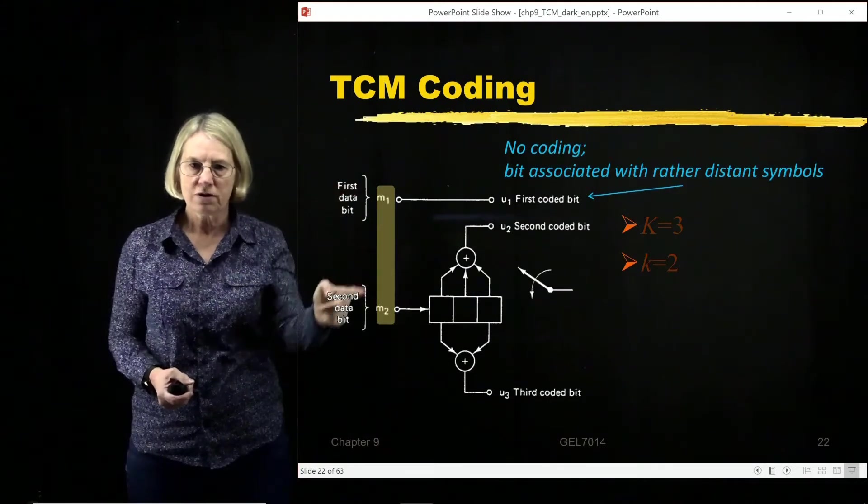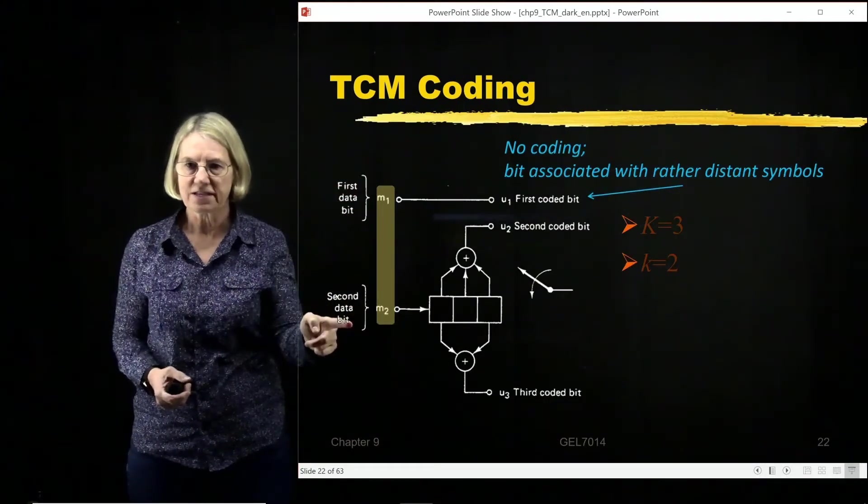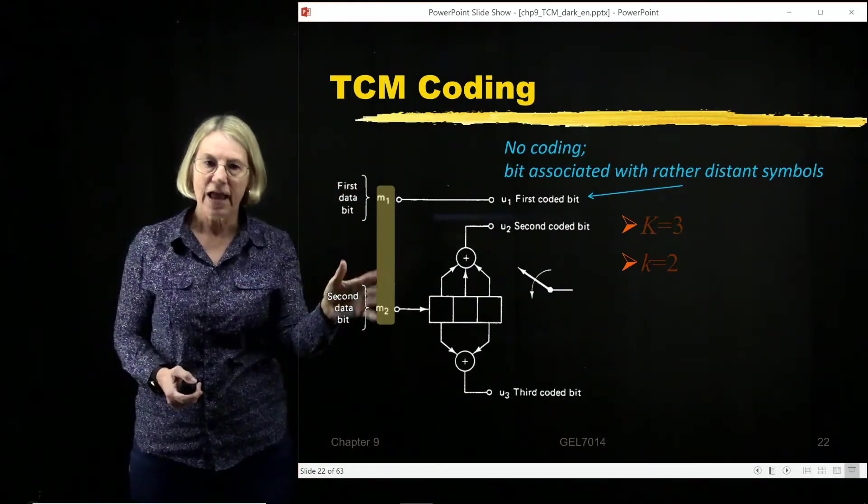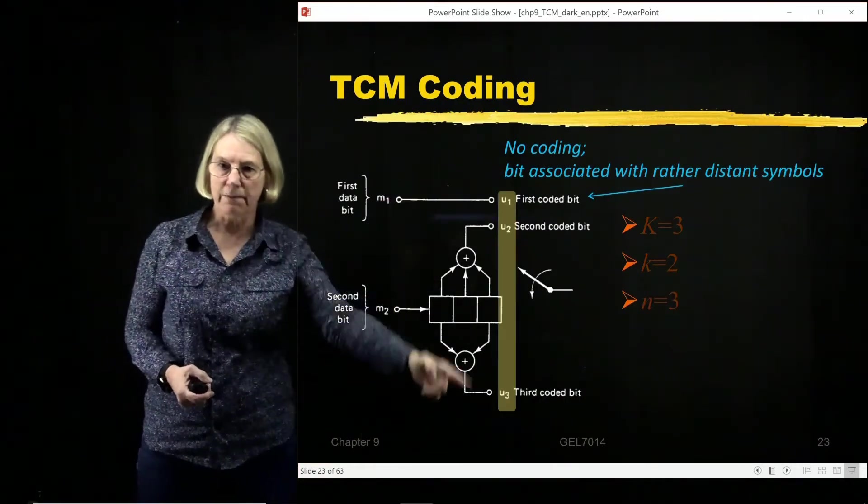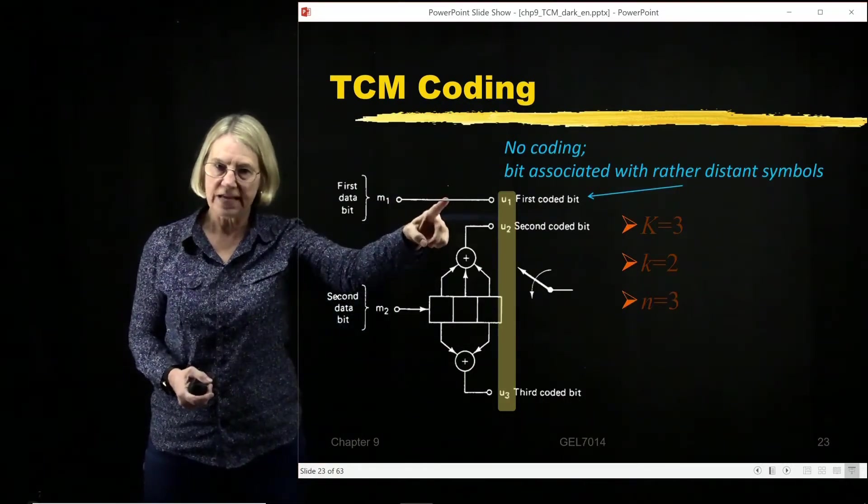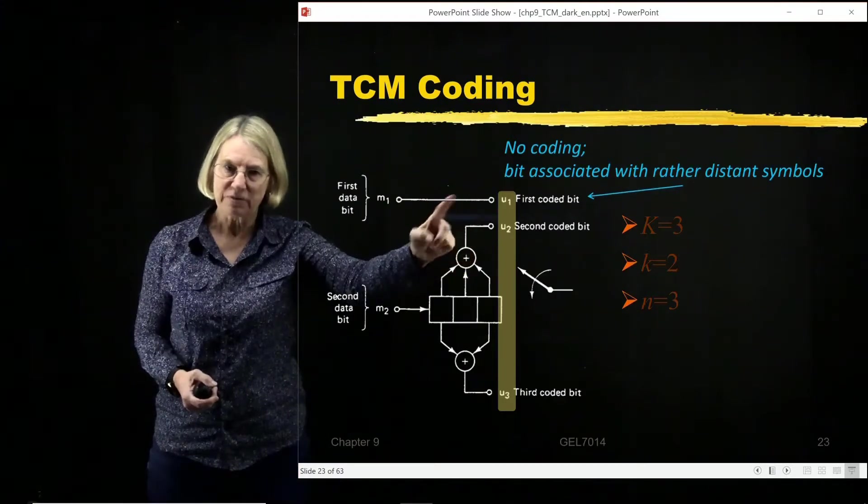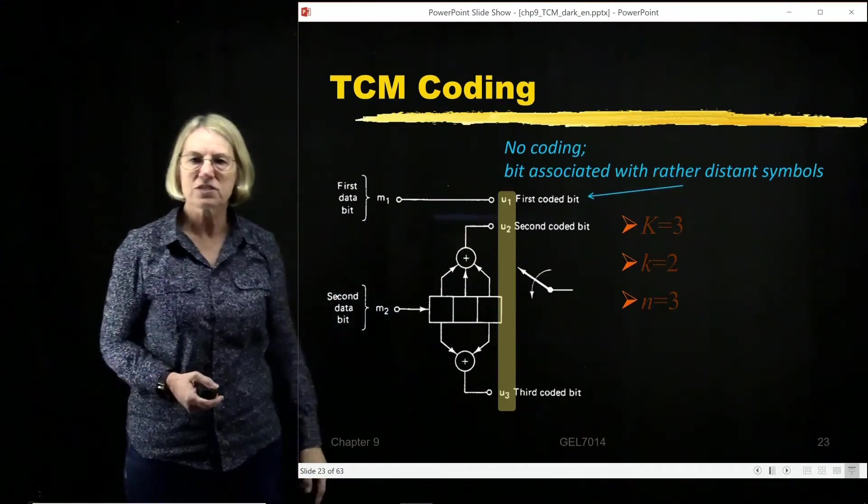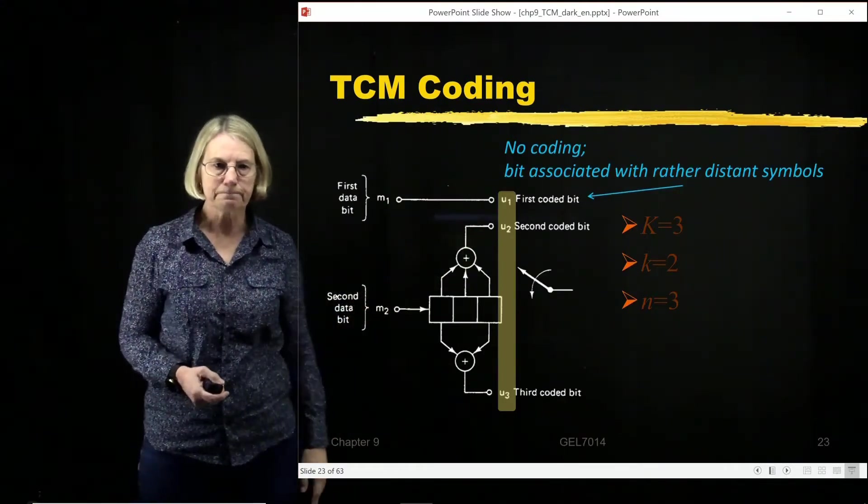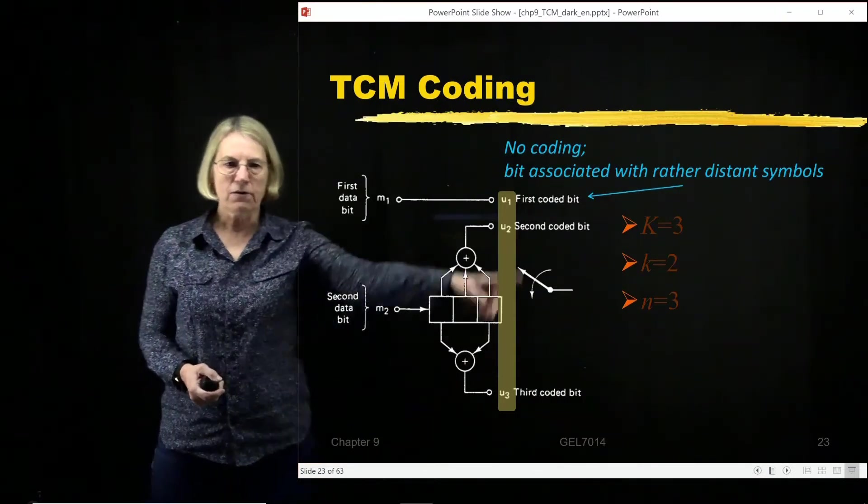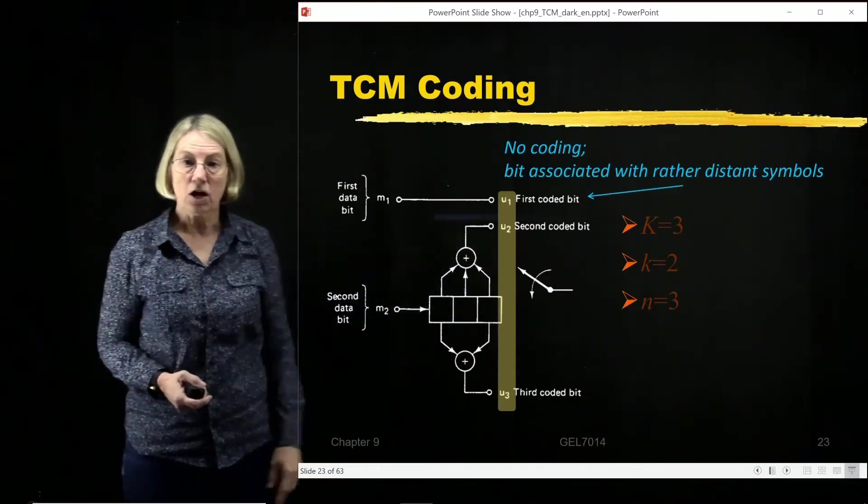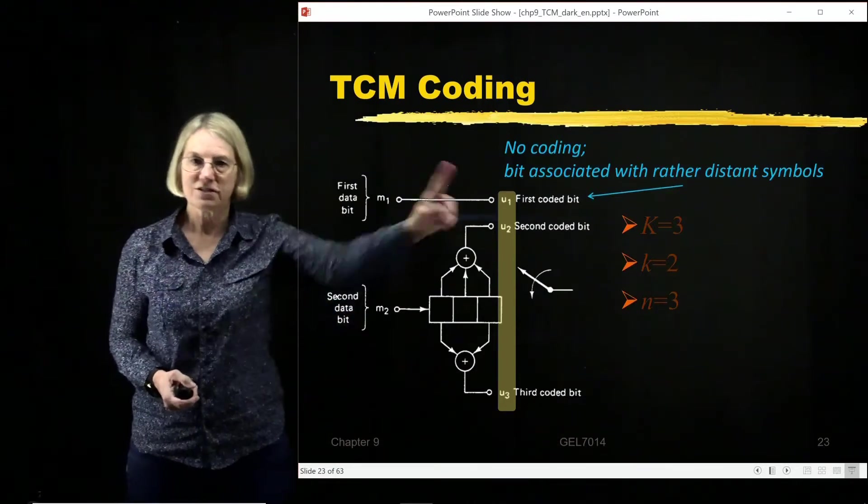There's two bits in the message. There's two bits that enter. And how many bits come out? Well we get three bits coming out. One of them without coding protection, and the other two are the result of an encoding signal. So we would call this a rate 2 over 3 code, because I go from 2 to 3.